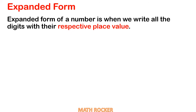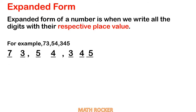The expanded form of a number is when we write all the digits with their respective place values. The number written with each digit's respective place value is called the expanded form. For example, 73,54,345 — this is in standard form — and we are going to convert it into expanded form.